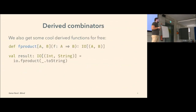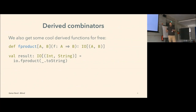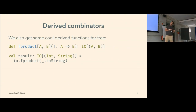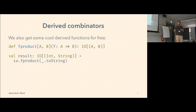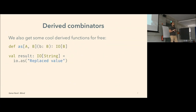Just by using the map function, we can derive some pretty cool combinators, like the fproduct function. It's kind of like the map function, but it keeps the value that was present in the functor along with the value produced by the function that you give to the map function. And we also have the `as` combinator, which just replaces the value inside the functor.